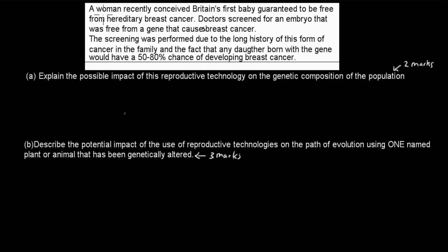The question is: A woman recently conceived Britain's first baby guaranteed to be free from hereditary breast cancer. Doctors screened for an embryo that was free from a gene that causes breast cancer. The screening was performed due to the long history of this form of cancer in the family, and the fact that any daughter born with the gene would have a 50 to 80% chance of developing breast cancer.